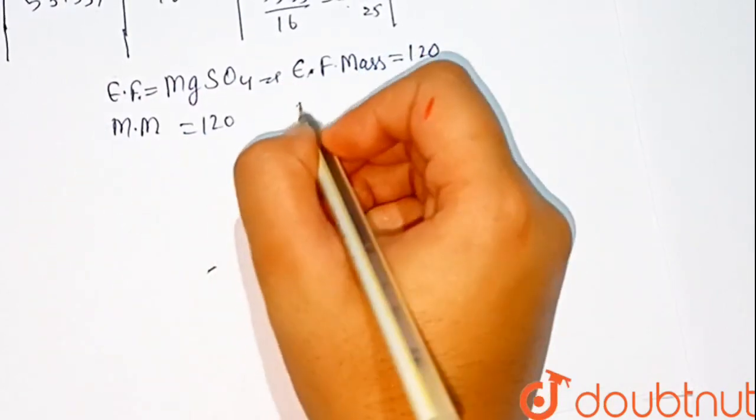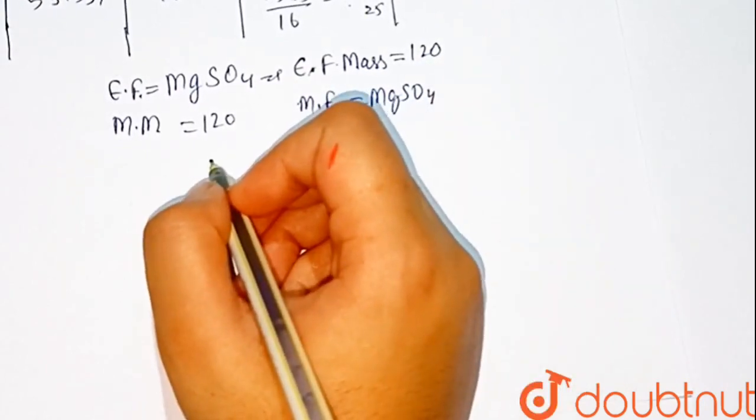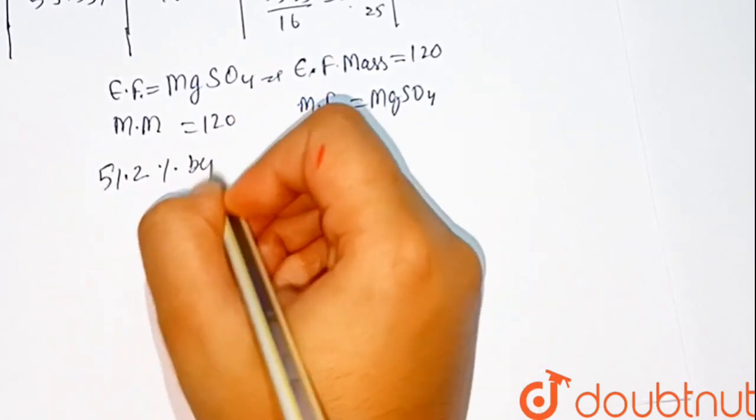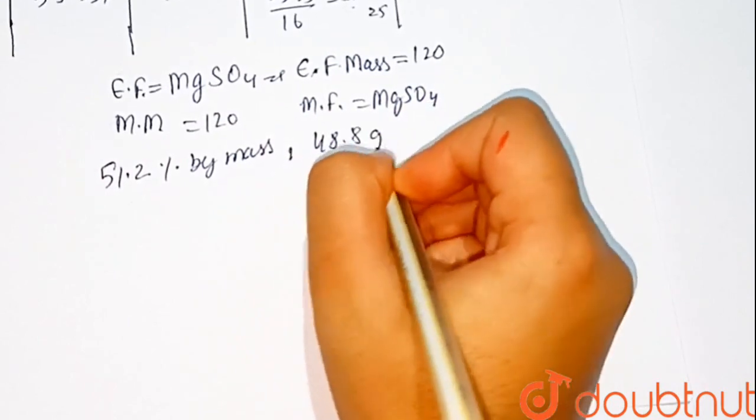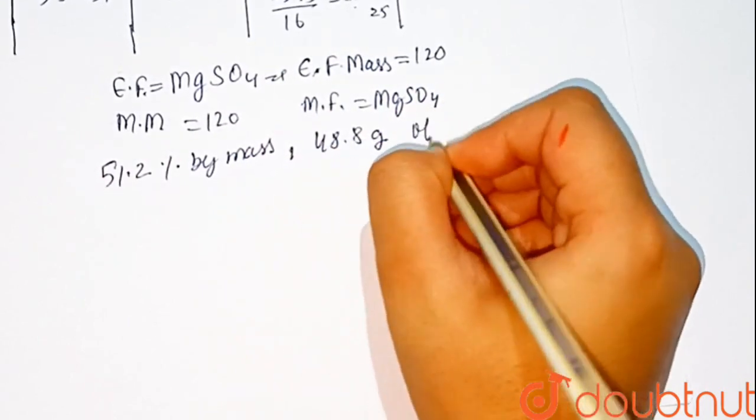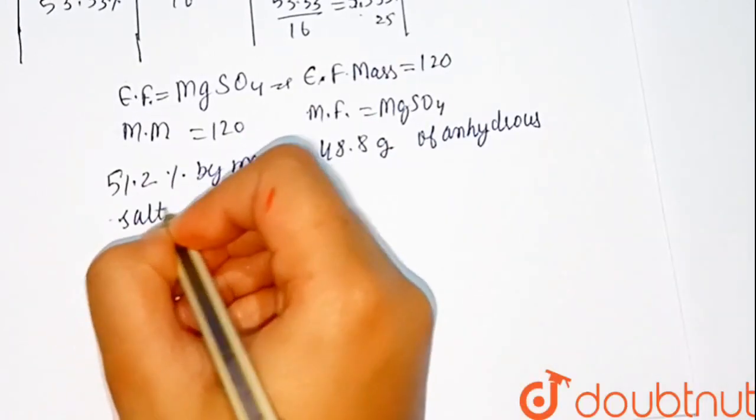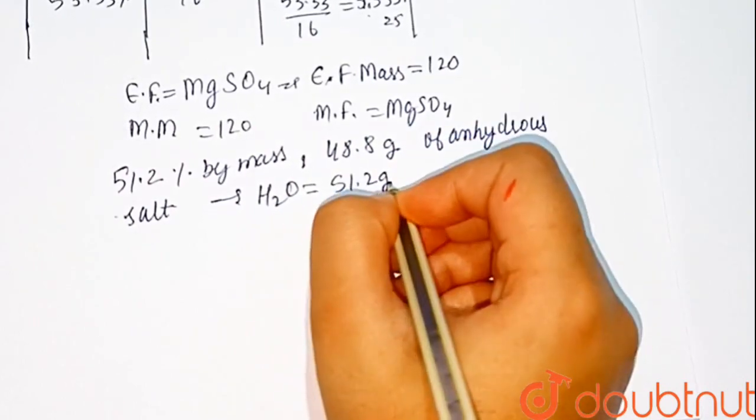A crystalline salt on becoming anhydrous salt loses 51.2% by mass. This means 48.8 grams of anhydrous salt contain water which equals 51.2 grams.